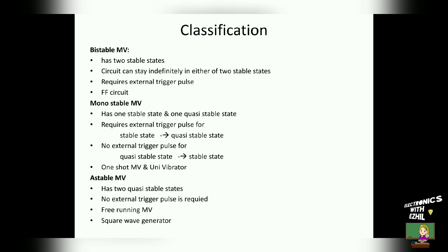The second one is monostable multivibrator. It has one stable state and one quasi-stable state. This circuit requires an external trigger pulse for changing its state from stable state to quasi-stable state, but it does not require any external trigger pulse to change its state from quasi-stable state back to stable state. Other names of monostable multivibrator are one-shot multivibrator and univibrator.